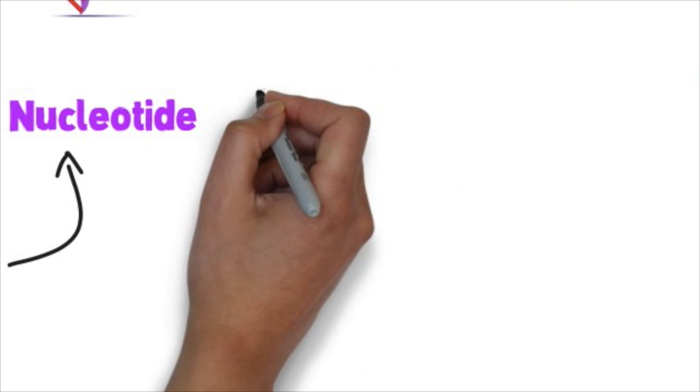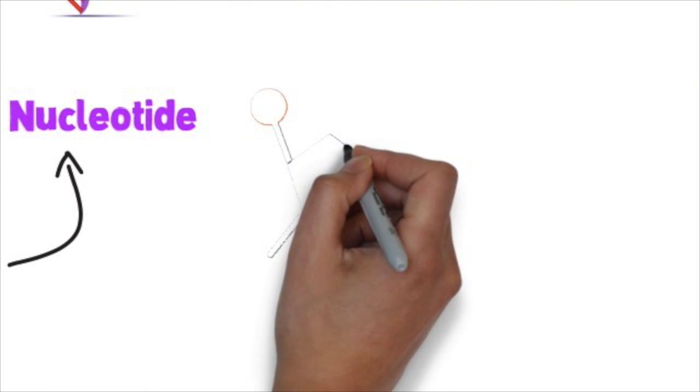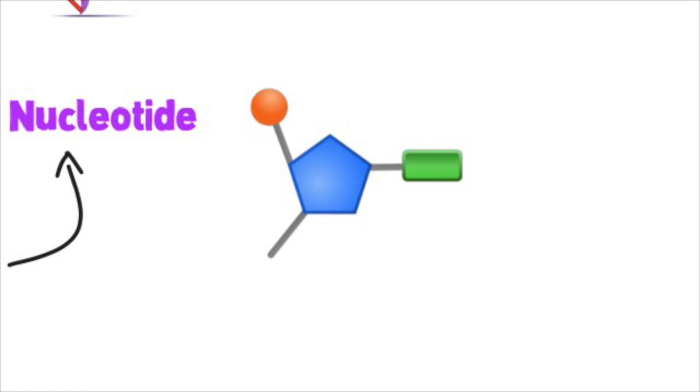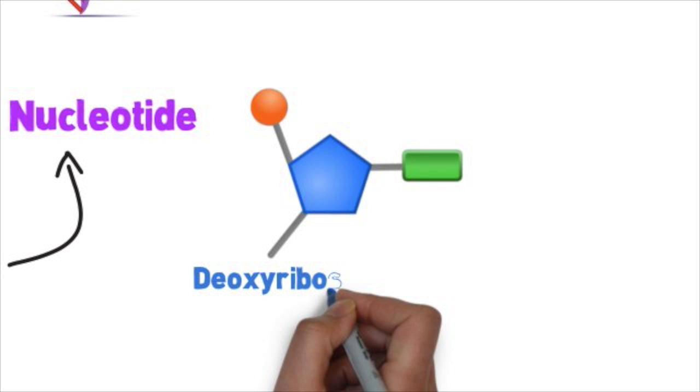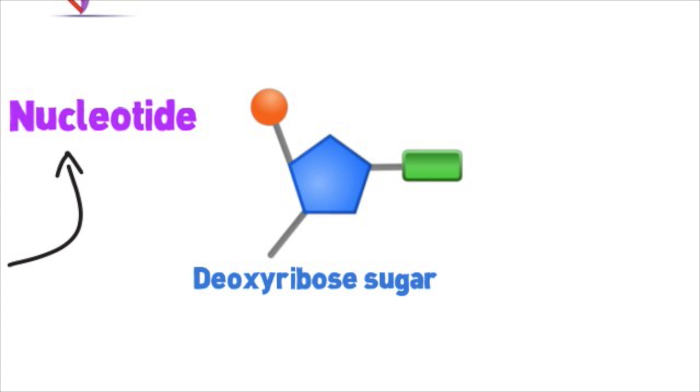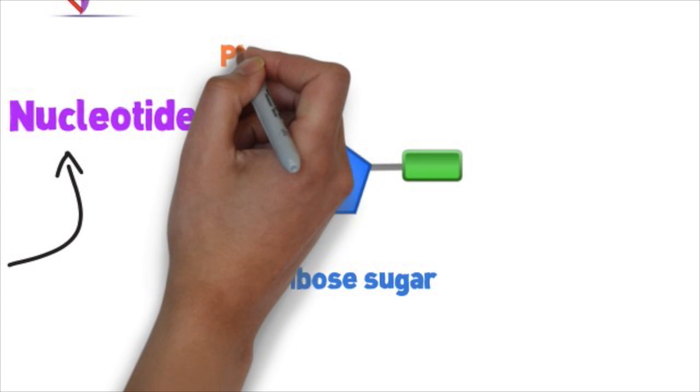Let's review how a nucleotide looks like. Earlier in the year, I referred to a nucleotide as a house and its property. A nucleotide is made of a sugar which represents the pentagon or house-like figure. The sugar in DNA is called deoxyribose.